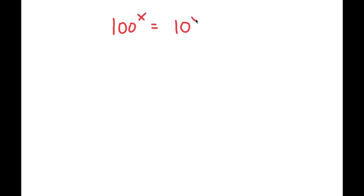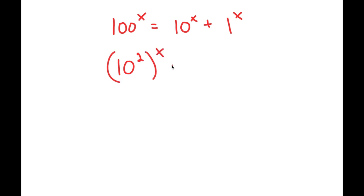In this video, I'm going to be solving the problem 100 to the power of x is equal to 10 to the power of x plus 1 to the power of x. To solve this, I'm first going to rewrite 100 to the power of x as 10 squared to the power of x.